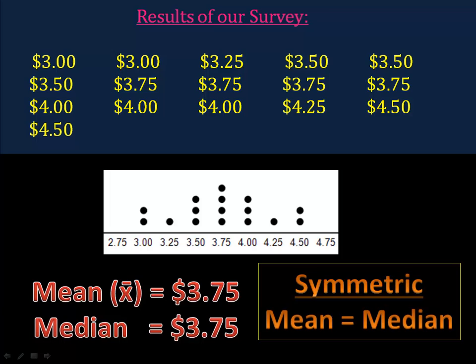In this example, we find that there's a mean of $3.75 and a median of $3.75. It just so happens that if your data is symmetric, the mean and the median will be the same.